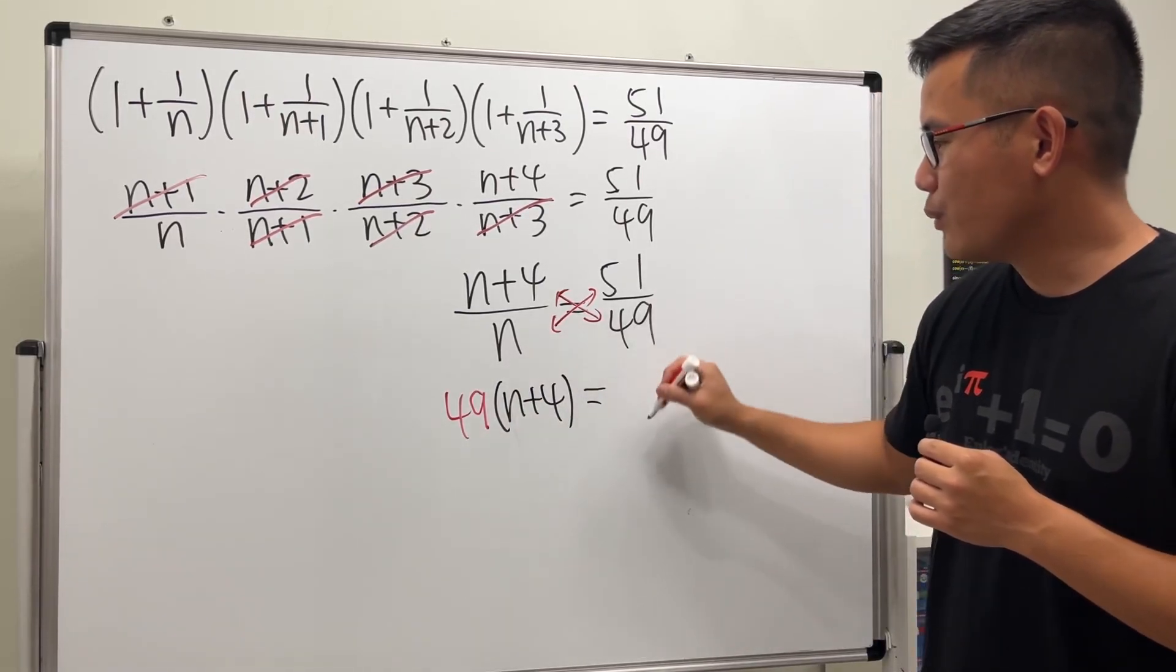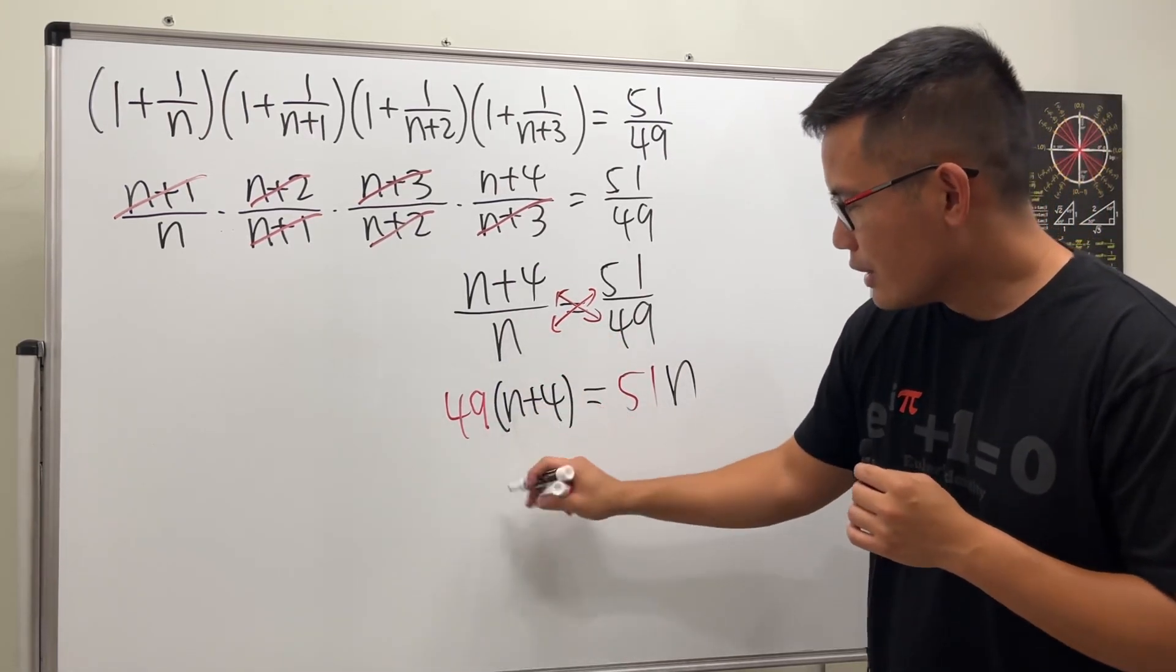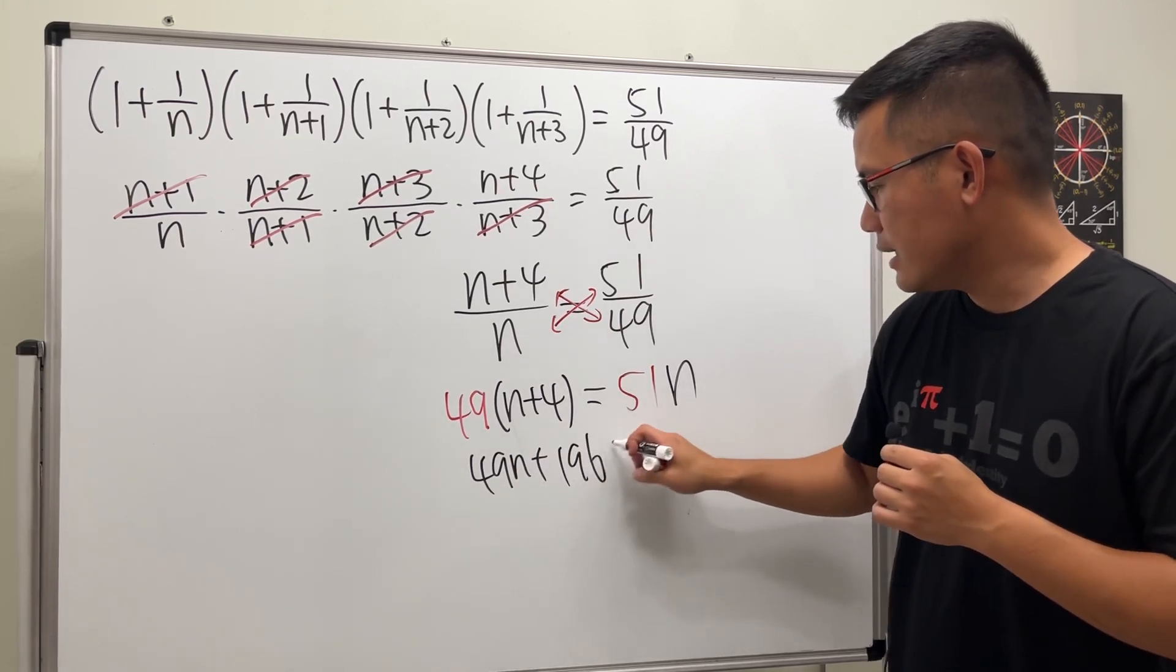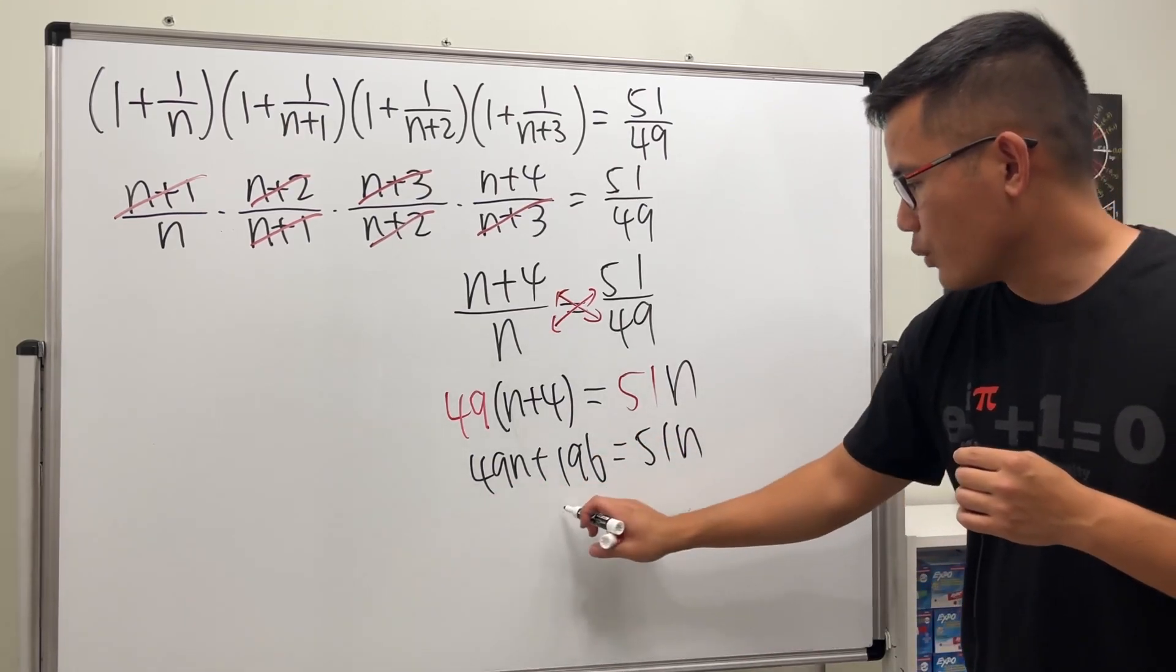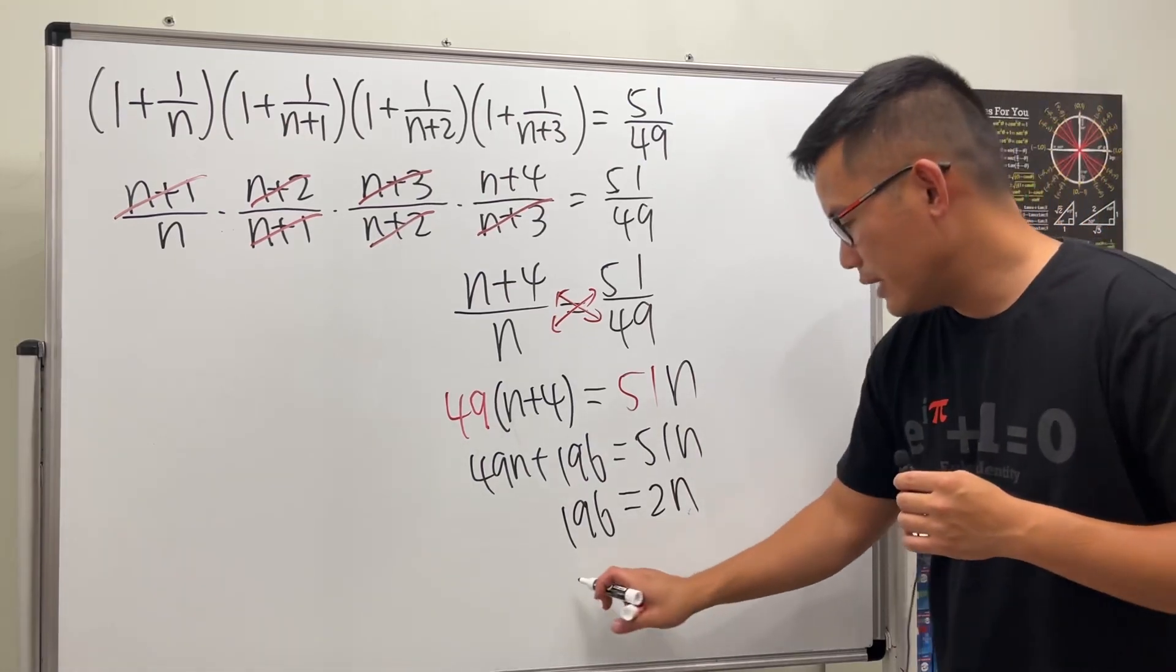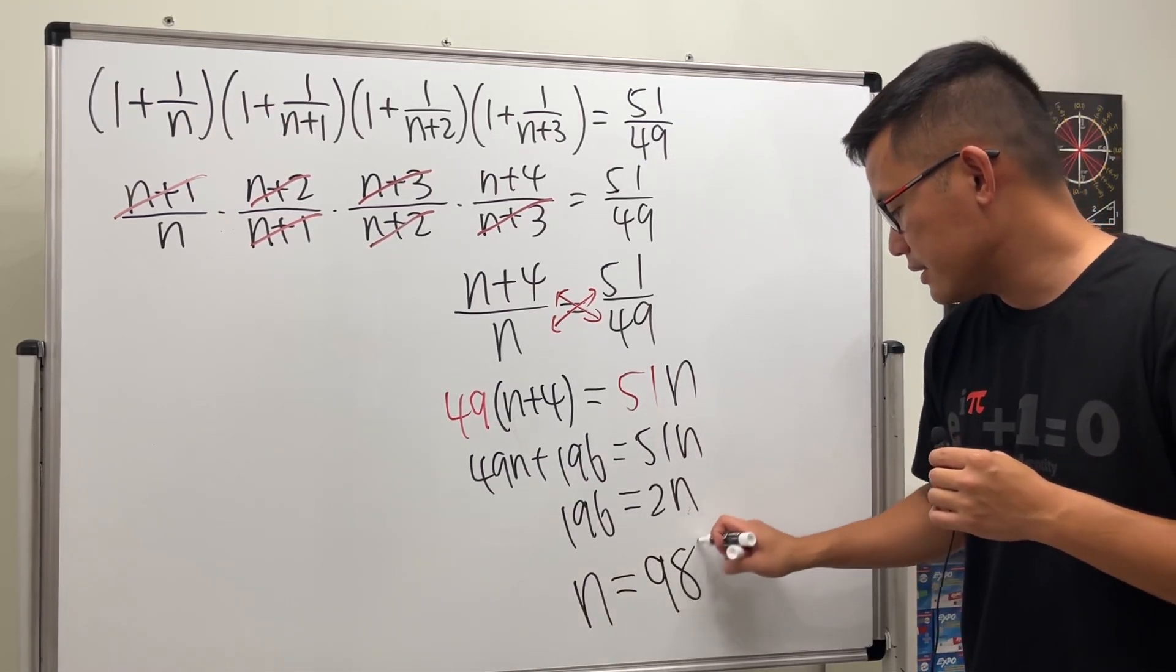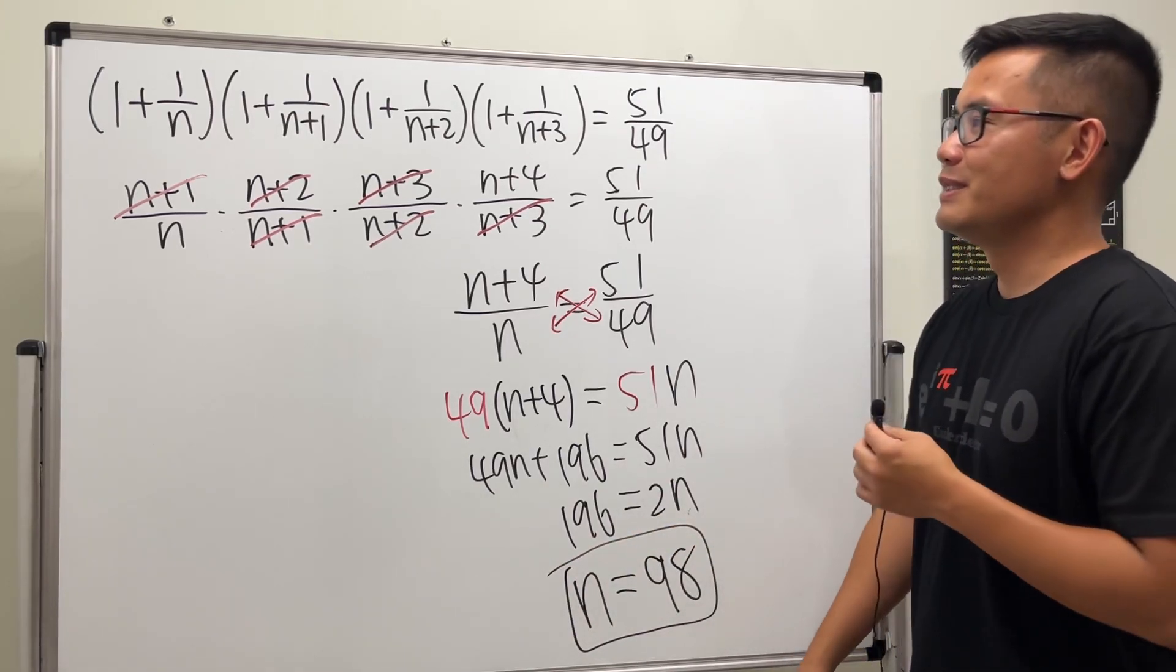That's equal to 51 times n. Work this out: 49n + 196 = 51n. Move this to the other side, so 196 = 2n. Divide both sides by 2, and n equals 98.